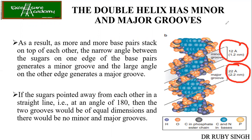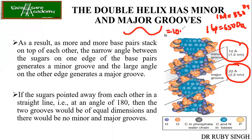Please remember these values for solving problems based on DNA structure. One nucleotide weighs around 330 Dalton; one base pair is 650 Dalton. In B-form DNA, one helix has 10.5 base pairs per helical turn. The distance between two nucleotides is 3.3 Å — in some textbooks it is given as 3.4 Å. These values will be helpful in future problem-based questions.